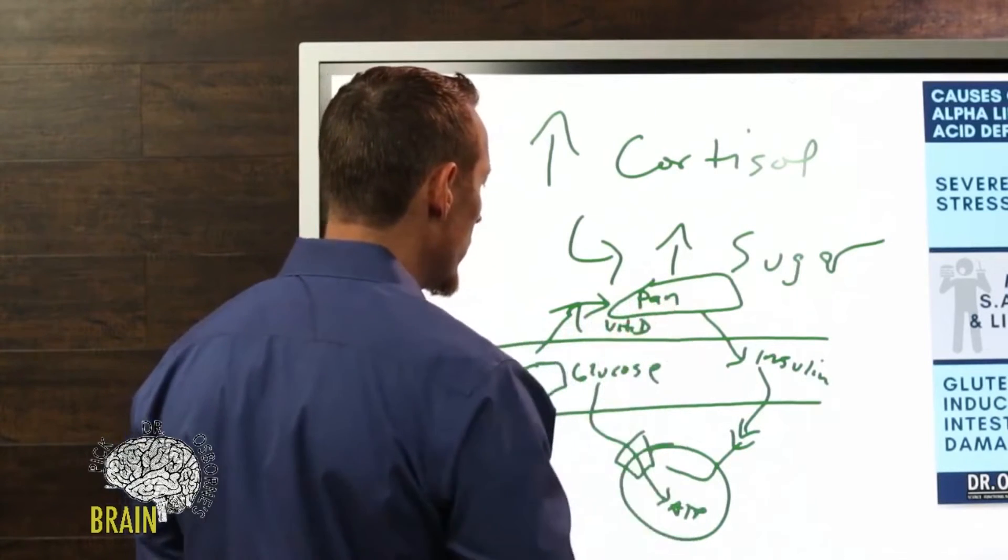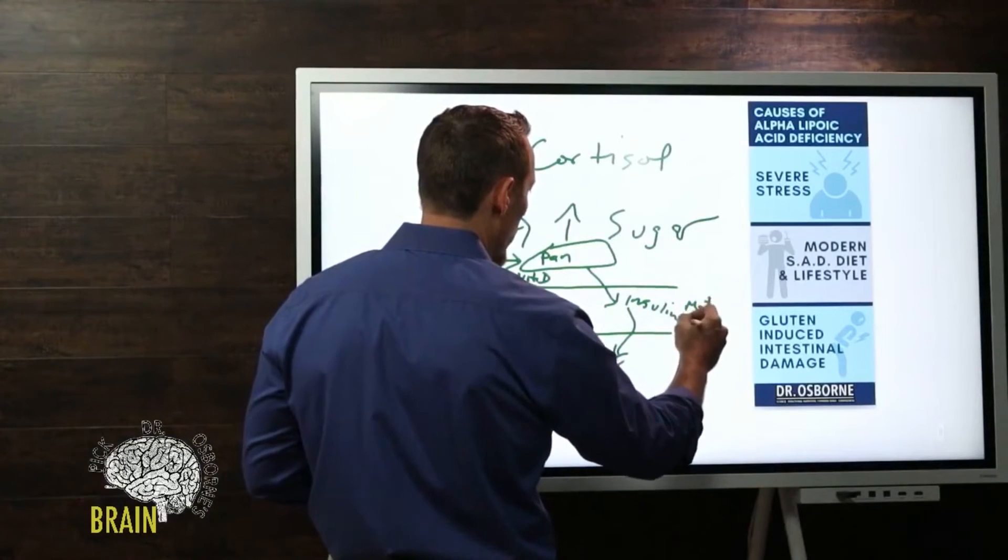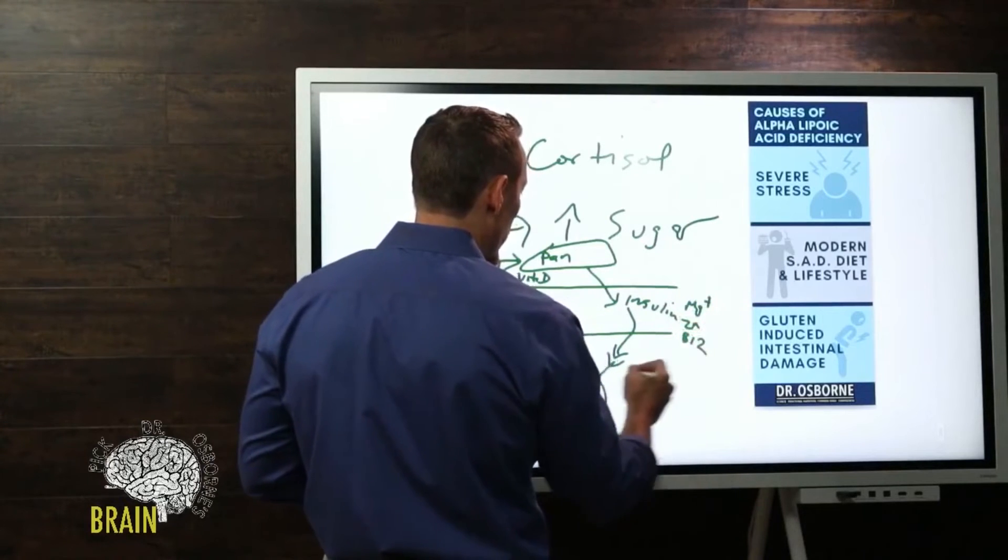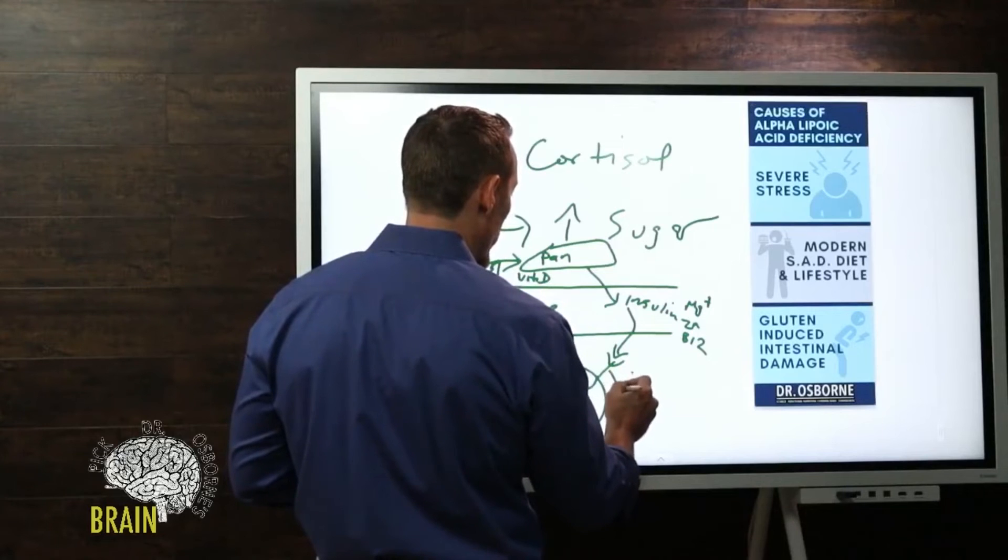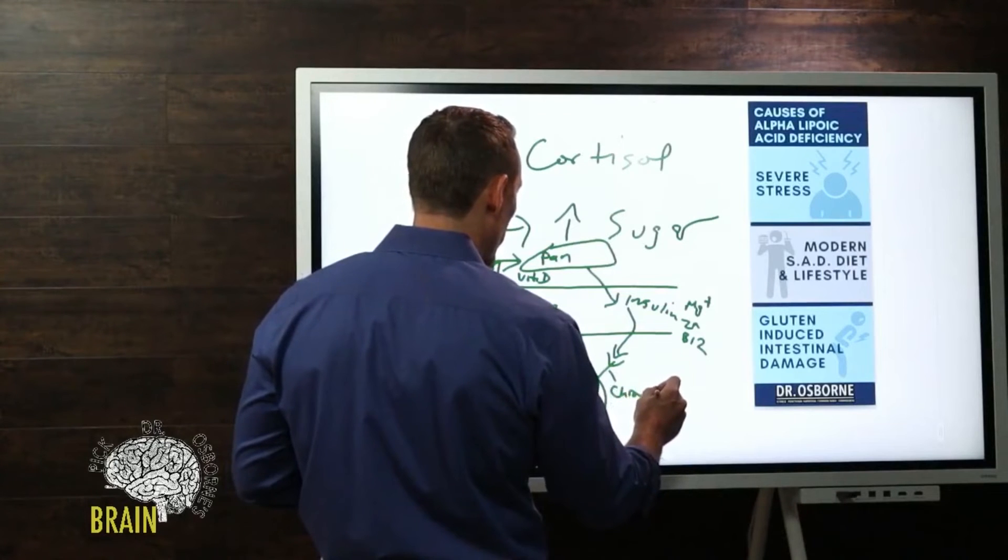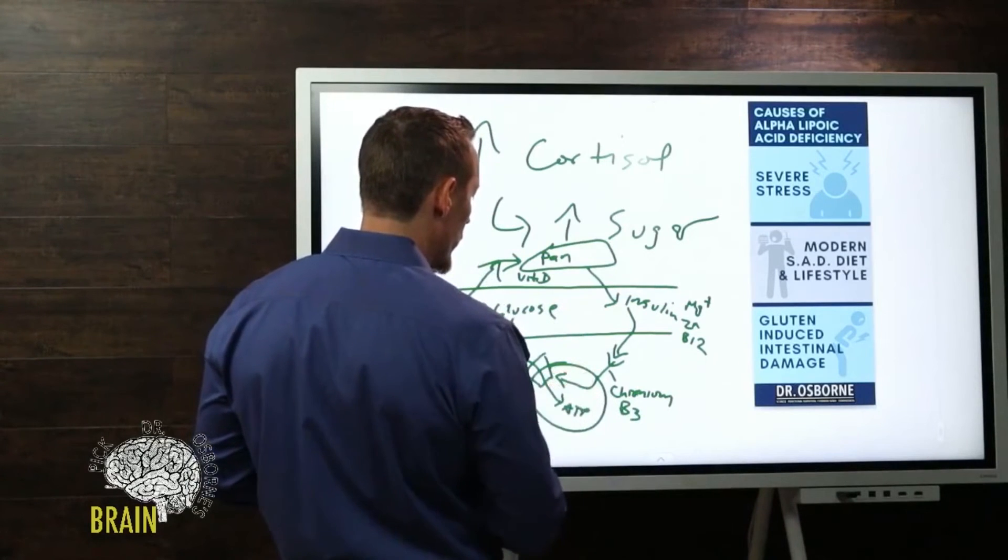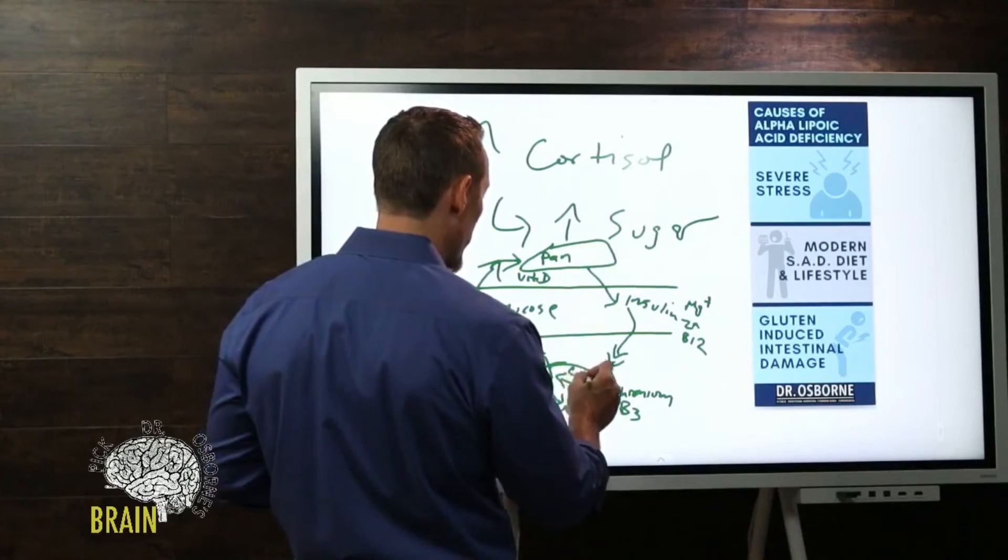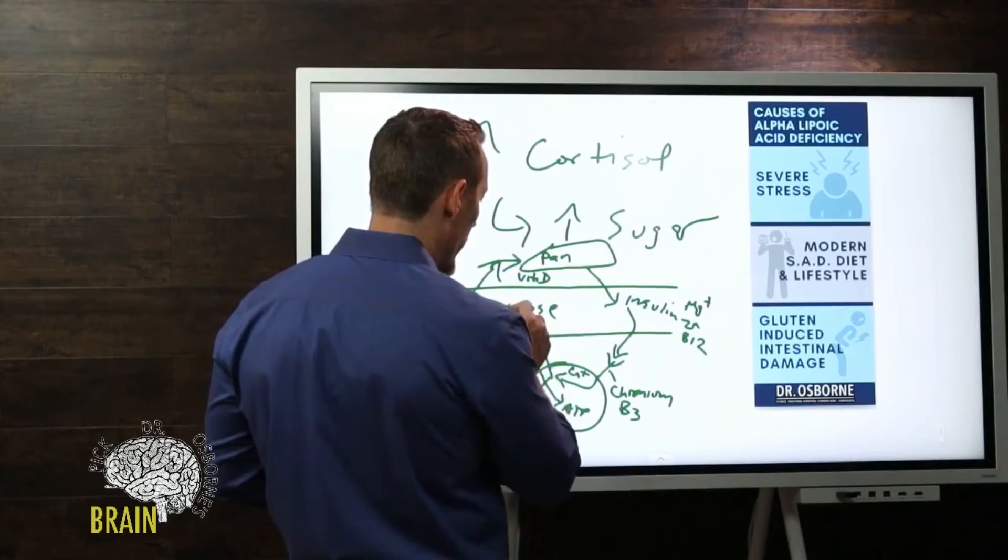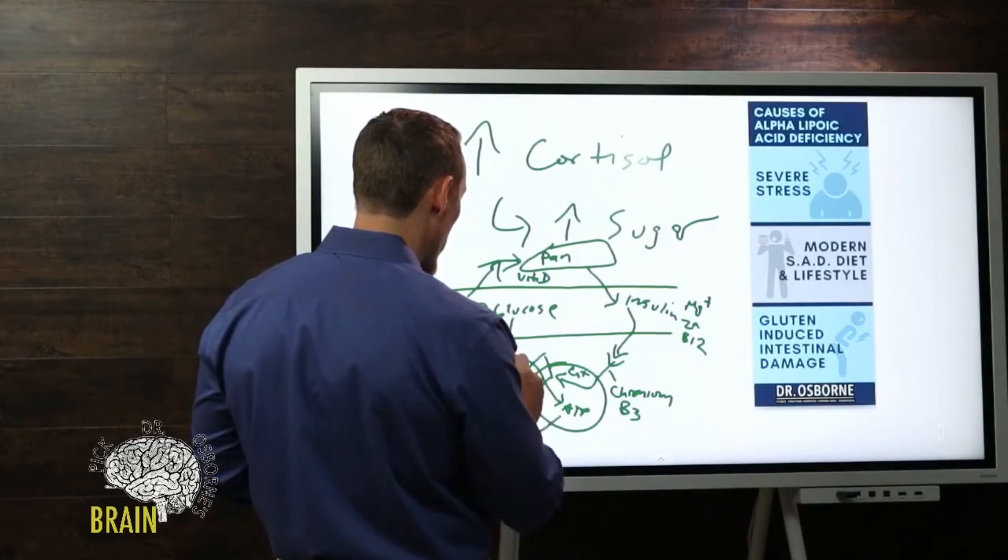If we break that down a little bit more: for your pancreas to get the message, you've got to have adequate vitamin D. To properly produce insulin you need magnesium, zinc, vitamin B12. The insulin receptor's made out of chromium - chromium's nickname is GTF or glucose tolerance factor. So chromium plus vitamin B3 equals the insulin receptor. Then this message that goes through the cell is calcium dependent - calcium helps deliver that message. For you to be able to take that glucose and break it down into ATP requires all the B vitamins, CoQ10, vitamin C, and copper.